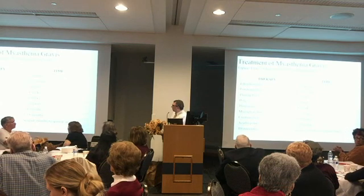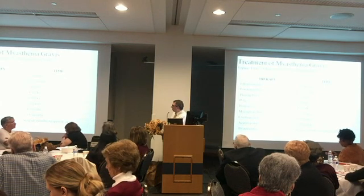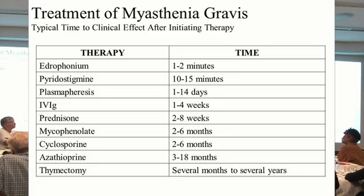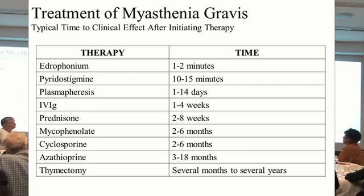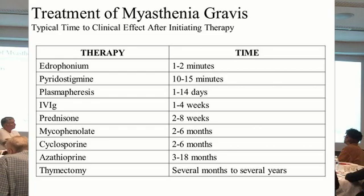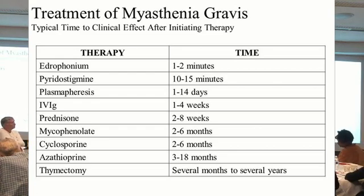How quickly these drugs kick in depends on the drug. An edrophonium or Tensilon test injected in the vein works in a minute or two. A pill of pyridostigmine takes about 10 to 15 minutes. Plasmapheresis or IVIG takes a few days or a week or two to kick in. Prednisone takes two to eight weeks, other oral drugs take months, and thymectomy takes months or years.